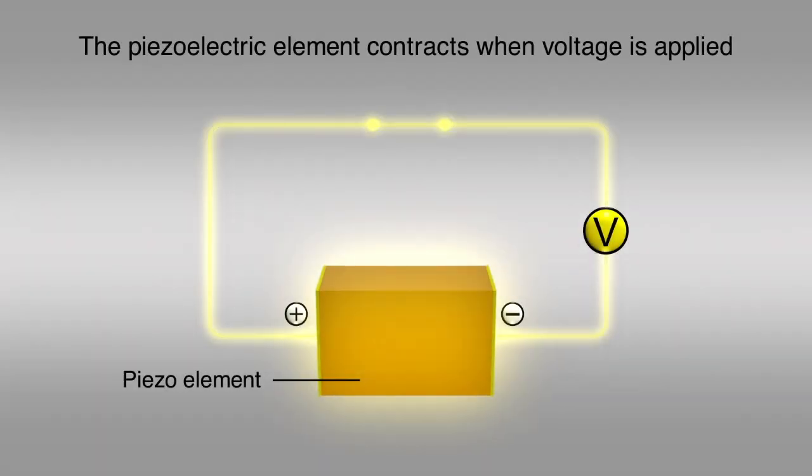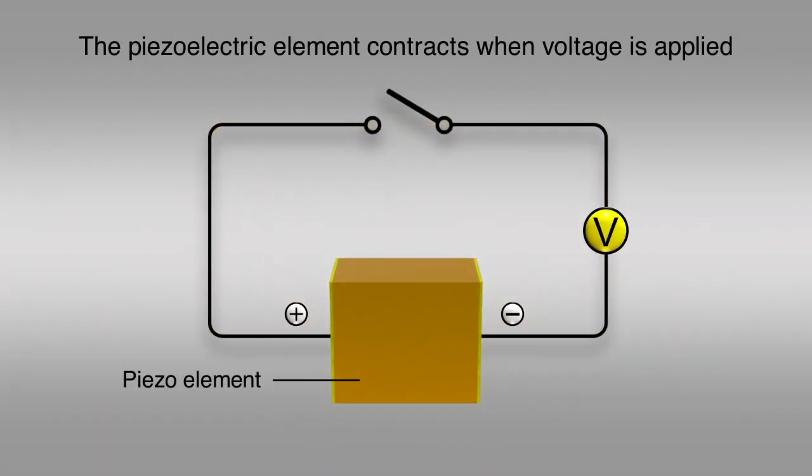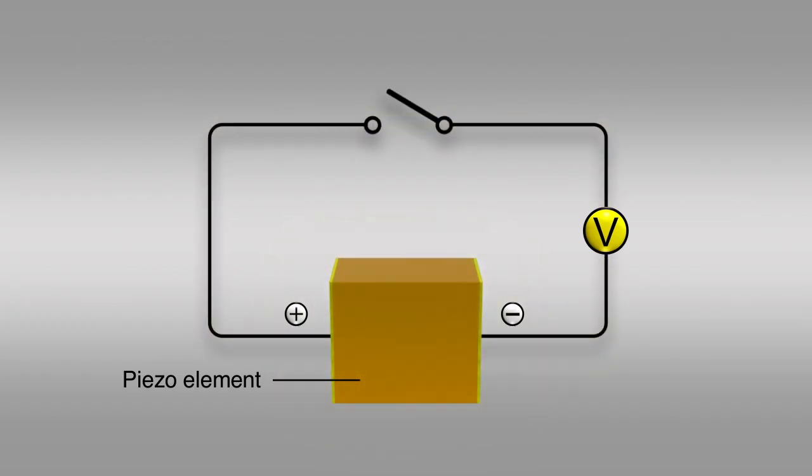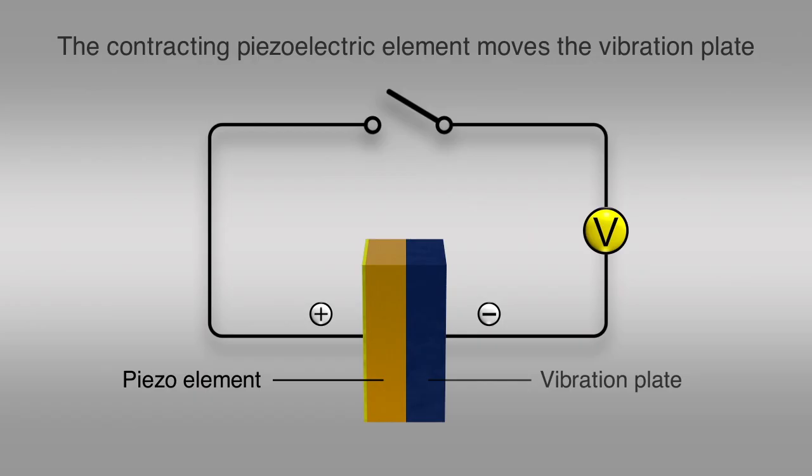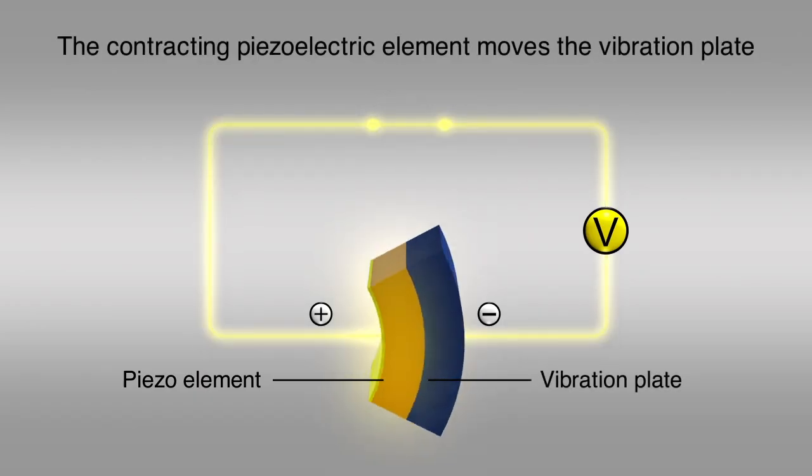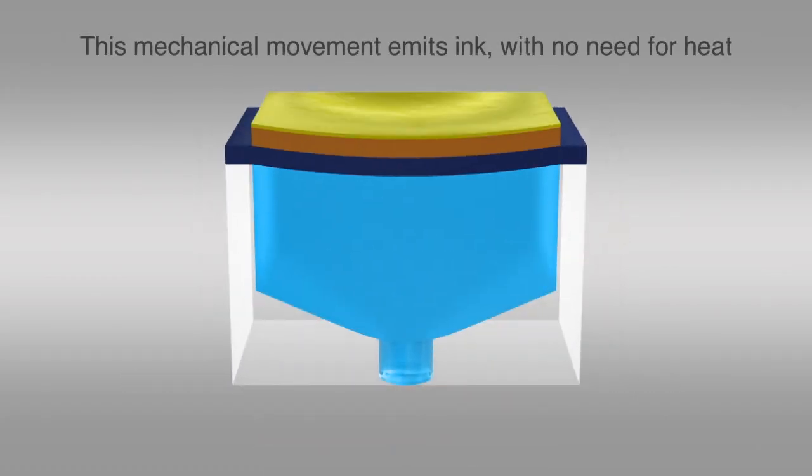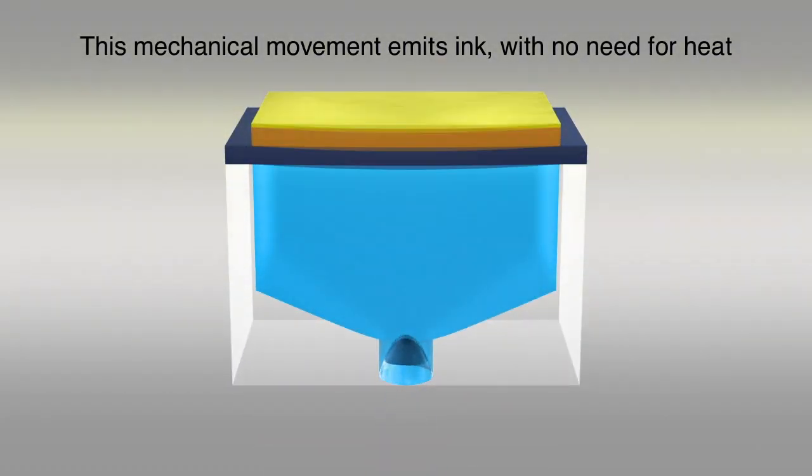Epson's piezo printheads are driven by piezoelectric elements, which contract when voltage is applied. Each piezoelectric element is paired with a vibration plate to form a set. The contracting piezoelectric element moves the vibration plate to generate an inkjet mechanically, with no need to heat the ink.